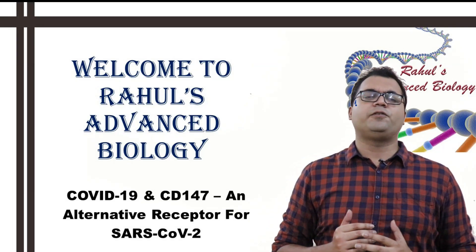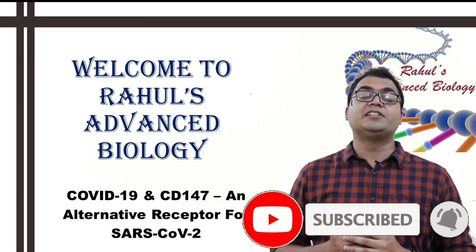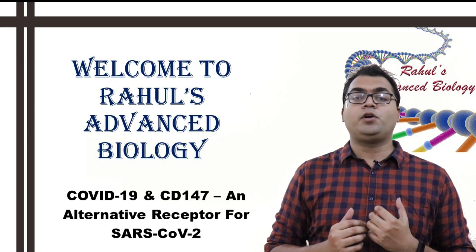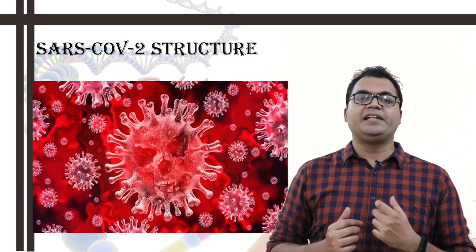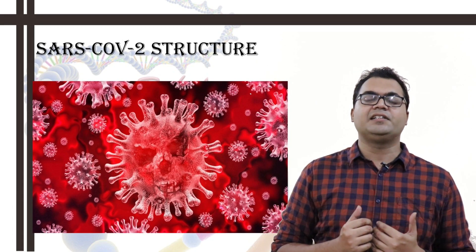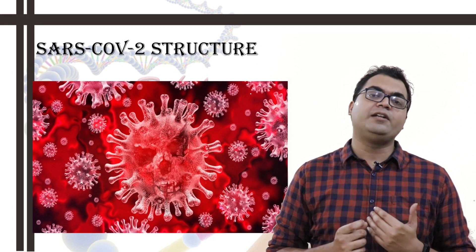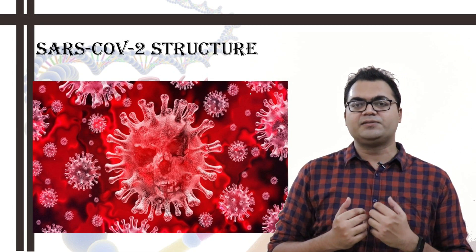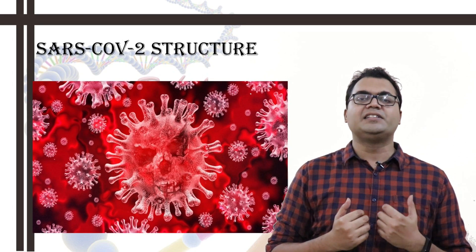Hello friends, welcome to yet another intriguing edition of Rahul's Advanced Biology. Today I will bring you a very ecstatic topic known as COVID-19 and its alternative receptor CD147 or cluster of differentiation 147. This specific SARS-CoV-2 virus, which causes COVID-19, has been termed a global pandemic by the World Health Organization. More than 5 million people have already been affected and more than 3 lakh people have already lost their lives. Scientists throughout the globe have been trying meticulously to come up with various vaccine regimens and drug types to curtail this pandemic.